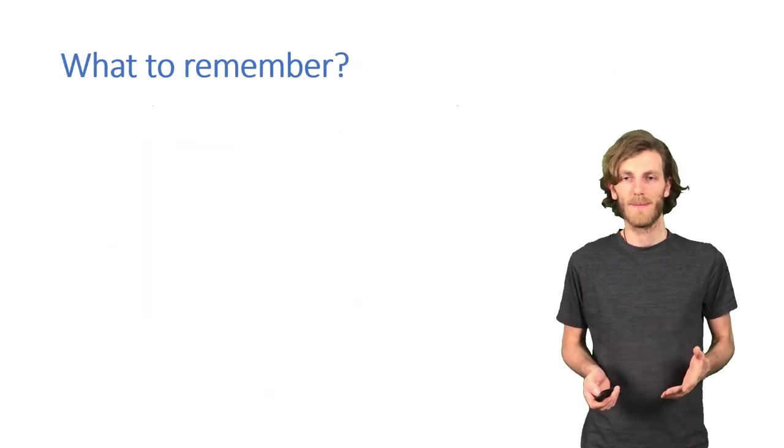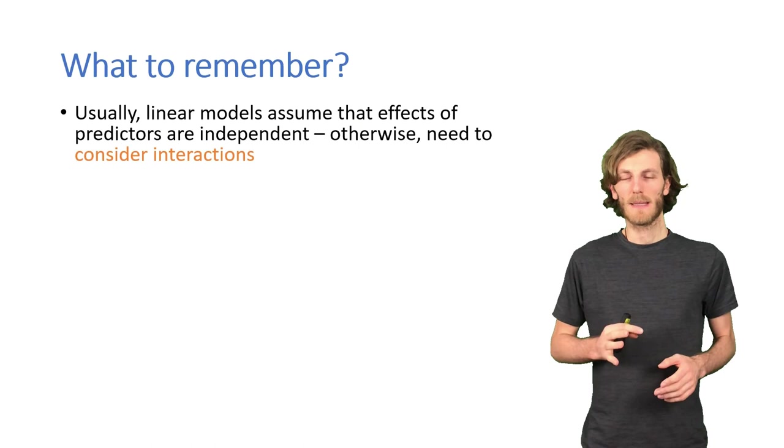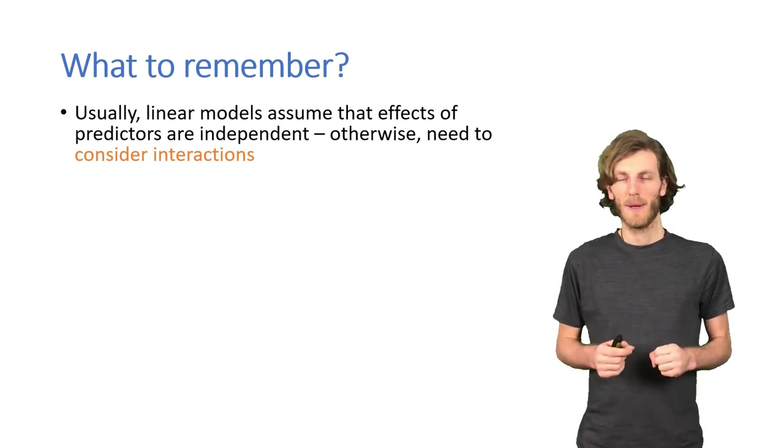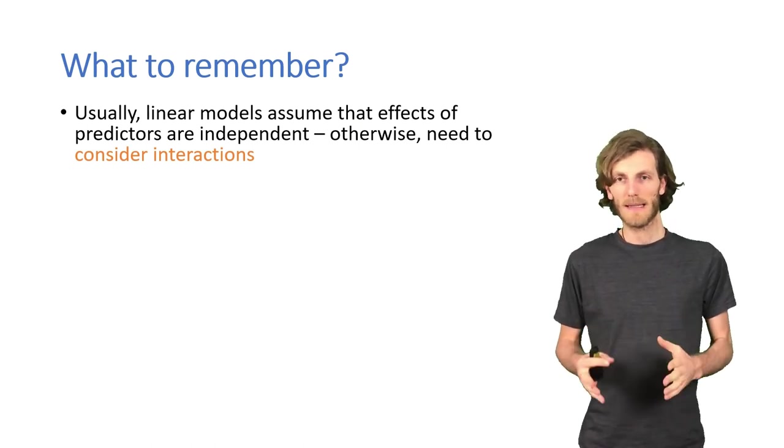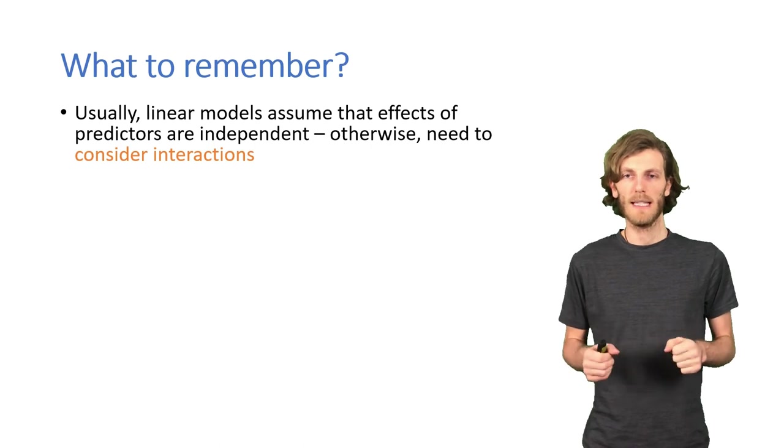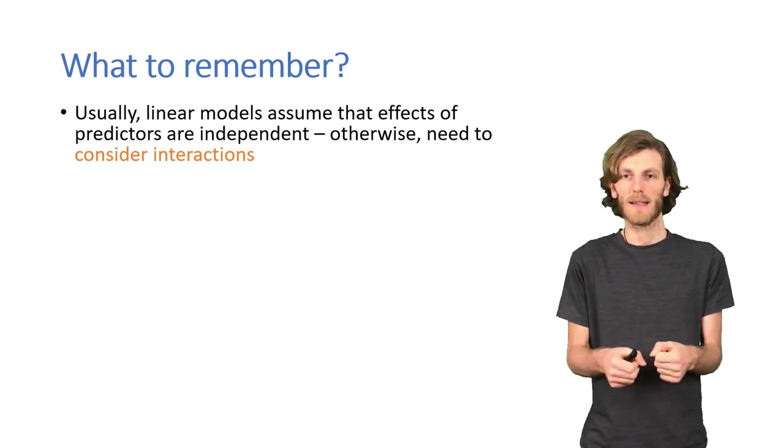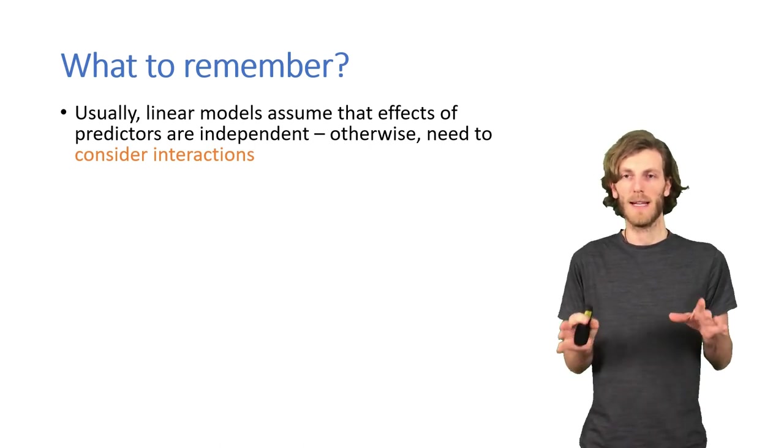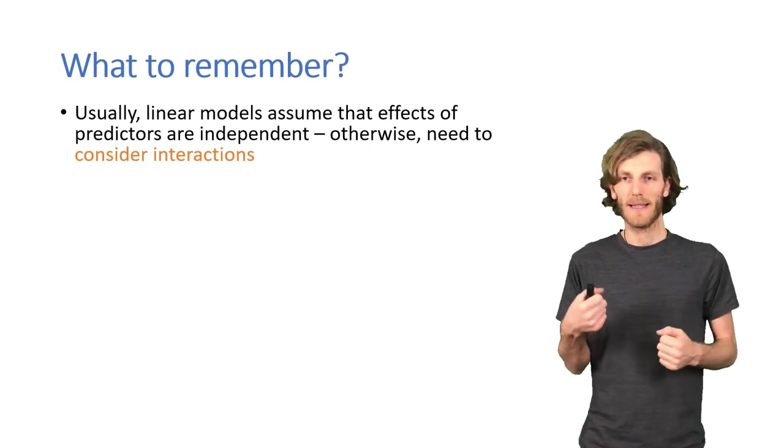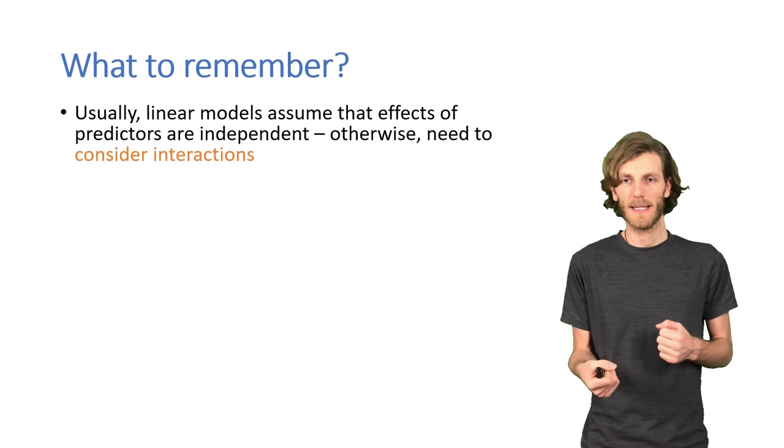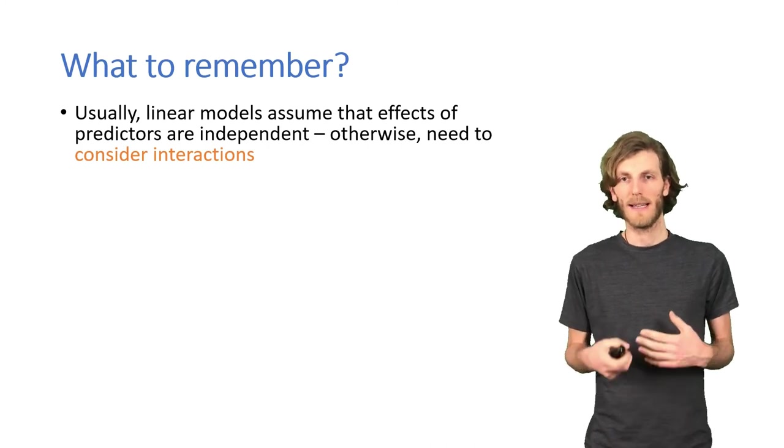So this is another way of making sense of an interaction between two continuous variables that's not constrained by the idea of there being one moderator. So what to remember? First and most important thing is that linear models, in their most basic form, assume that each predictor has an independent effect, irrespective of the other predictors. If that's not the case, if the effect of one predictor varies based on the value of another predictor, we need to account for these interactions explicitly.